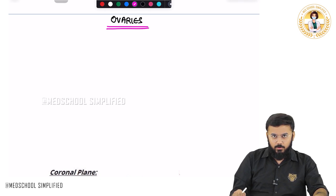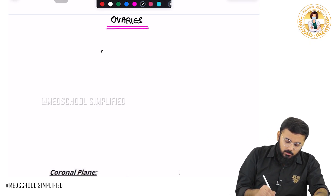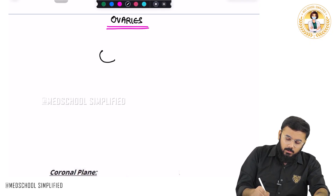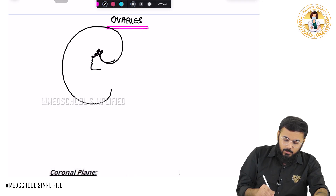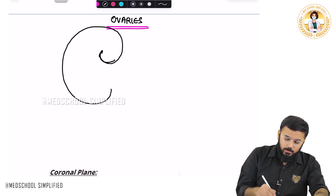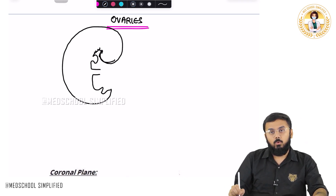Now where are these mesonephros present? To know where these mesonephros are present, let me just draw a rough picture of the developing baby. So let us say this is the developing fetus. This is called as the head fold, this is called as the pericardial sac, this is called as the gut. So this is how the structure is.